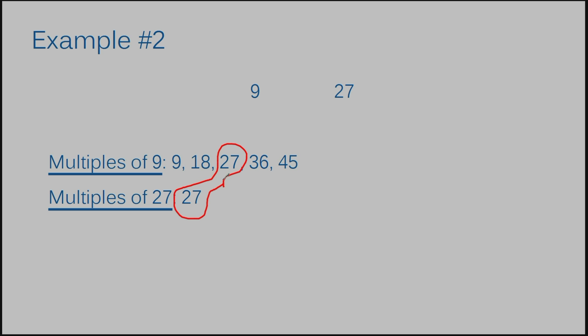I usually circle my answer. I used to call this a peanut with my students, because after you circle your answers when listing multiples it usually looks like a peanut shape — the shape is not lined up evenly so it ends up kind of looking like that. The answer to example number two is 27.